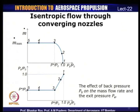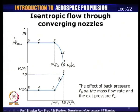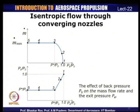Looking at Mach number and pressure ratio plots: at state 1, mass flow rate was zero because back pressure equalled reservoir pressure. As back pressure reduces, Mach number increases until state 3 at critical pressure P*, when Mach number reaches M = 1 and mass flow rate reaches its maximum. Reducing back pressure further does not change the Mach number — mass flow rate remains the same from states 3, 4, and 5.